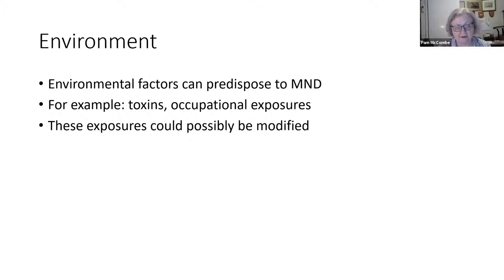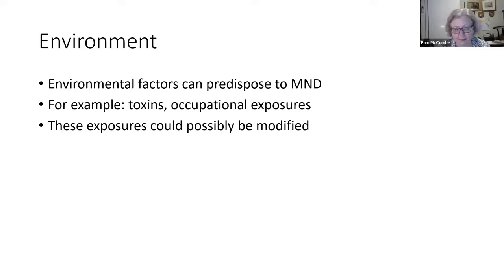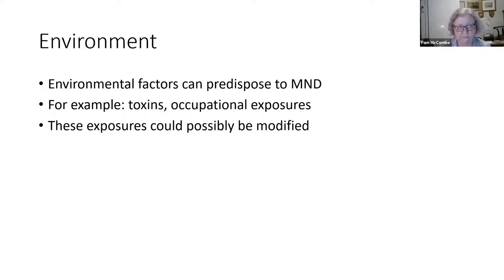We can't forget the environment. It's hard for us to get a handle on — genes are a bit easier since we can get DNA and look at it fairly readily. The environmental factors a person has been exposed to are harder to assess. But environmental factors can predispose to motor neurone disease — toxins like the famous cycads in Guam, and occupational exposures to things like formaldehyde. If MND, as we think it is, is a multi-stage process where a number of different things have to happen, people clearly can vary in their exposures, and those exposures could influence the rate of progression — and could potentially be modified.